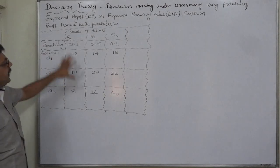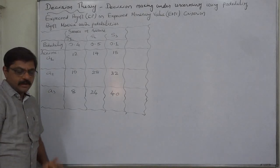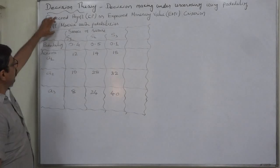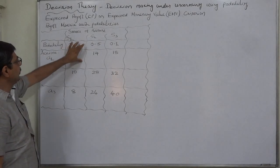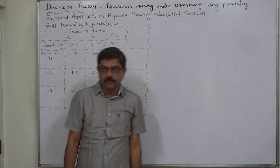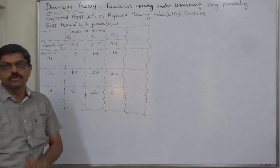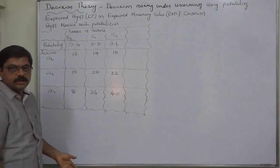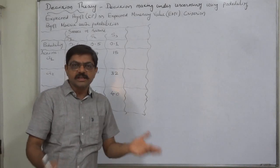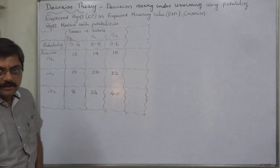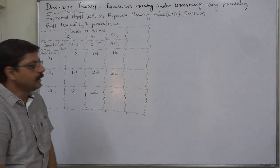If we know the probability of each mutually exclusive and exhaustive state of nature, we can use them either with payoffs directly or with opportunity losses. Using probabilities with payoffs gives us the expected payoff or EMV, and the action with the highest EMV should be selected. In the case of opportunity loss, the expected opportunity loss (EOL) or expected regret can be calculated, and the action with the lowest EOL should be selected. Let's apply the criteria of expected payoff.